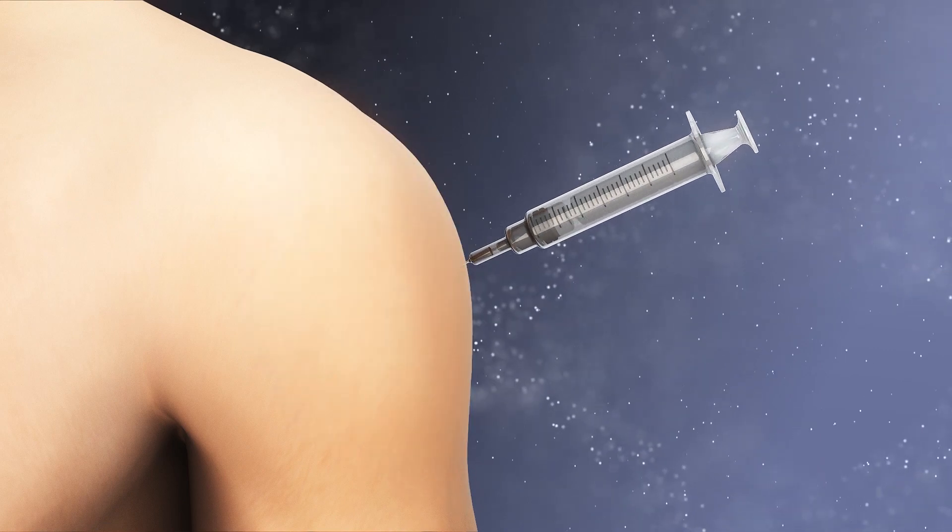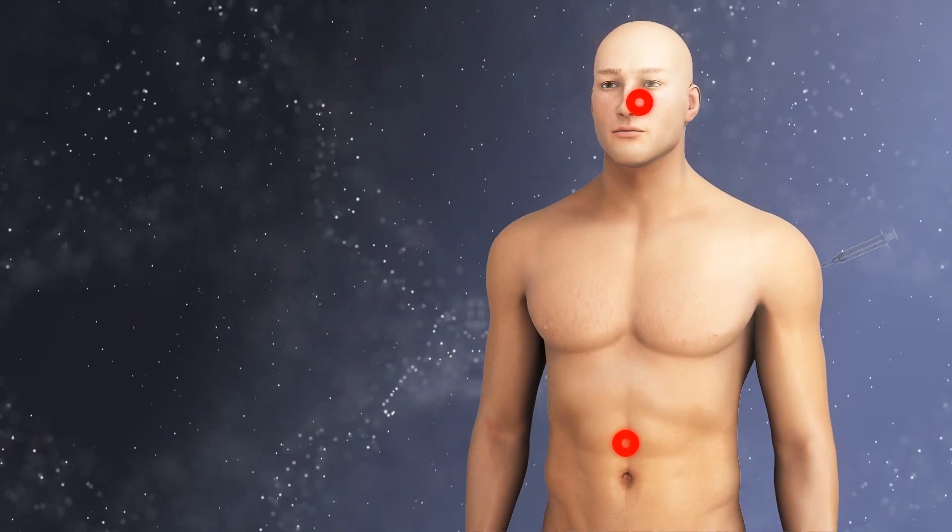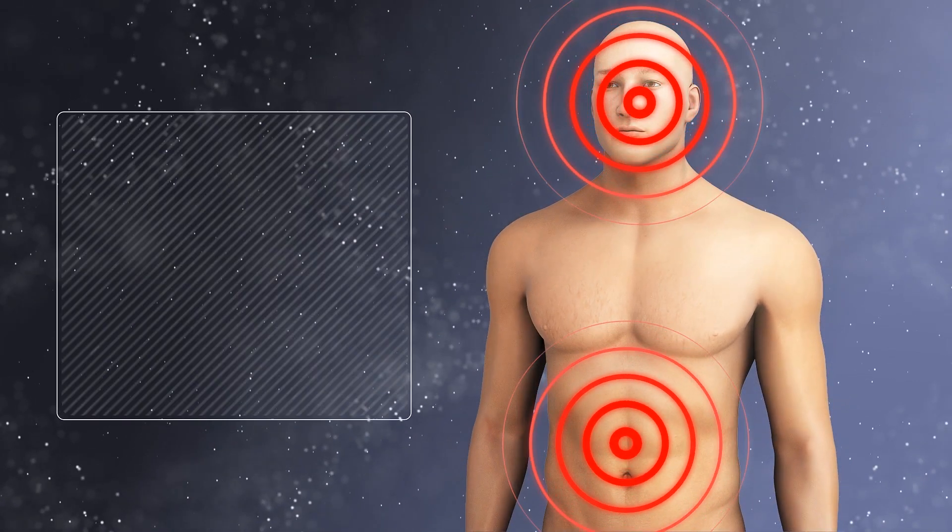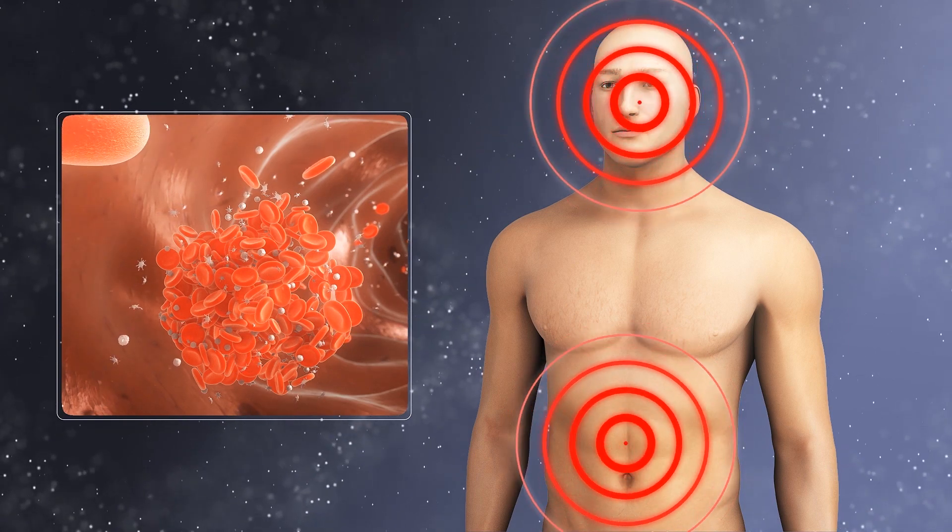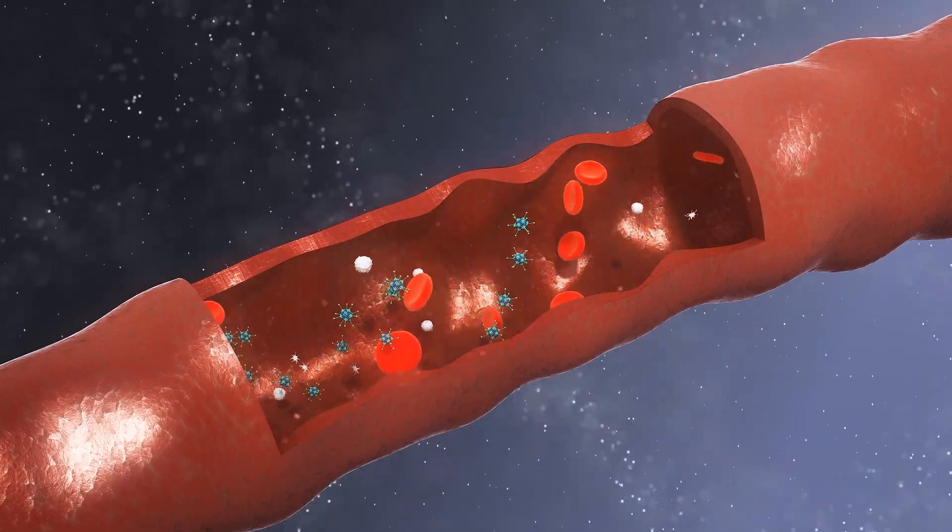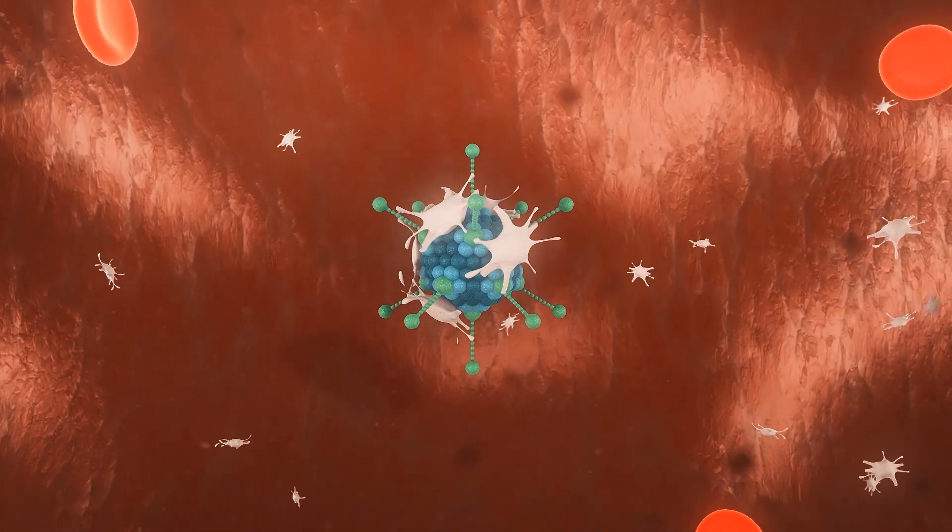AstraZeneca said the vaccine is thought to have saved more than a million lives around the world and prevented 50 million cases of COVID. The clots are more likely to occur because of a COVID infection than the vaccine, according to a spokesperson for the company.